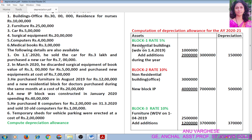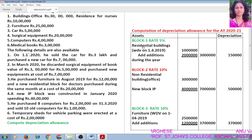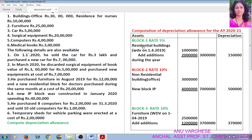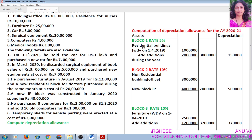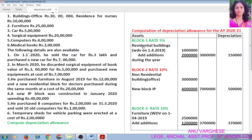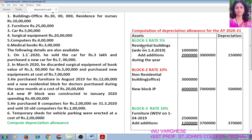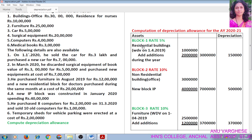Remember: for residential building, rate of depreciation is 5%. For non-residential building, rate of depreciation is 10%. For temporary erections, rate of depreciation is 40%. For furniture, fittings, and electrical fittings, rate of depreciation is 10%. Plant and machinery, motor cars, etc., rate of depreciation is 15%. Then for speedboats, ocean-going ships, etc., rate of depreciation is 20%. Then for computers and books for professional purpose, rate of depreciation is 40%.